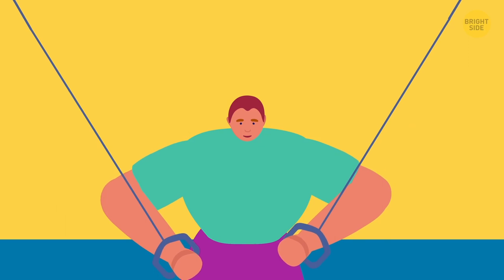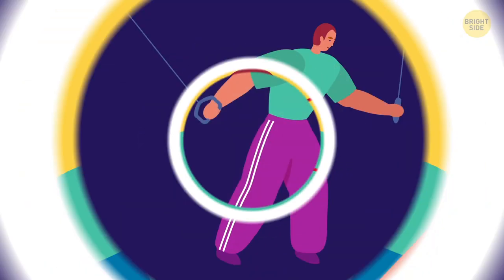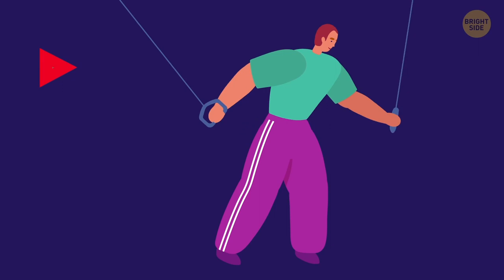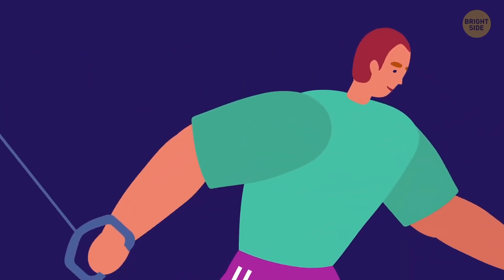When you're doing cable flies, don't bring your arms too far back. It can lead to a shoulder injury. You also shouldn't keep your elbows locked while doing this exercise. Otherwise, you'll put all the stress on your elbows and almost none on your chest muscles.